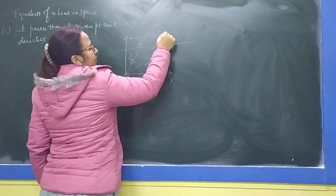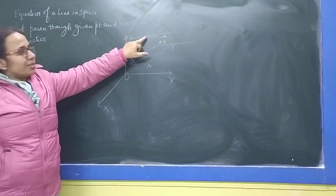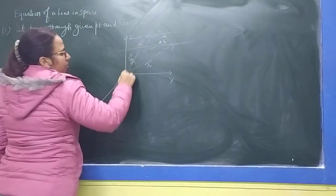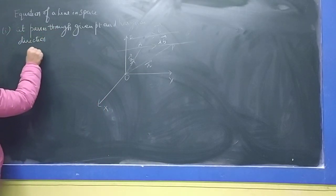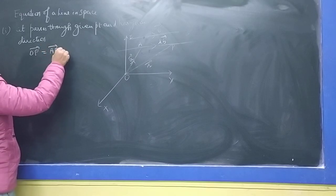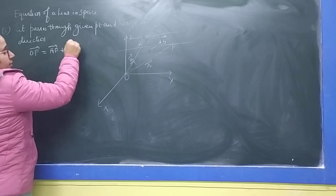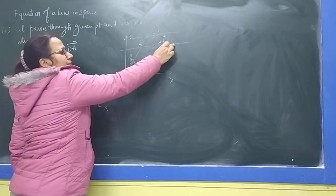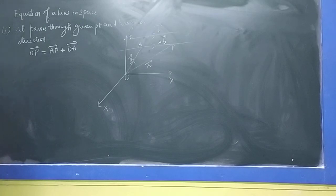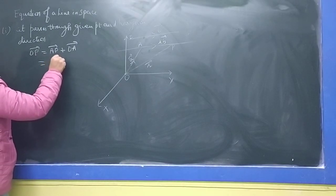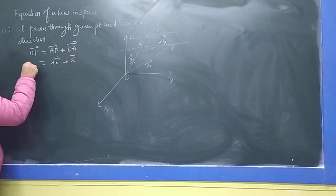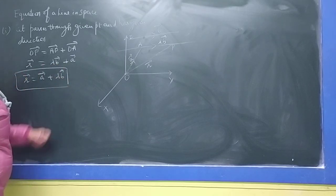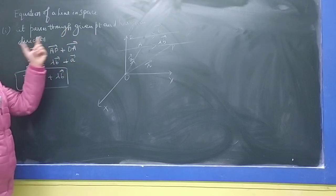That means the vector AP can be written as lambda times B. By the triangle law of vector addition, OP equals OA plus AP. So R equals A plus lambda B. This is the vector equation of a line passing through a given point with a given direction.